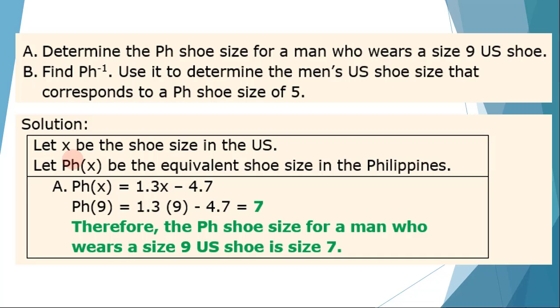Let x be the shoe size in the US and we have the function Ph(x) be the equivalent shoe size in the Philippines. For letter A, we are given the function 1.3x - 4.7 and we are to find a size 9, the counterpart of a size 9 US shoe size in the Philippines. So we have Ph(9). Just substitute 9 to x and we got 7. Therefore, the Philippine shoe size for a man who wears a size 9 US shoe is size 7.